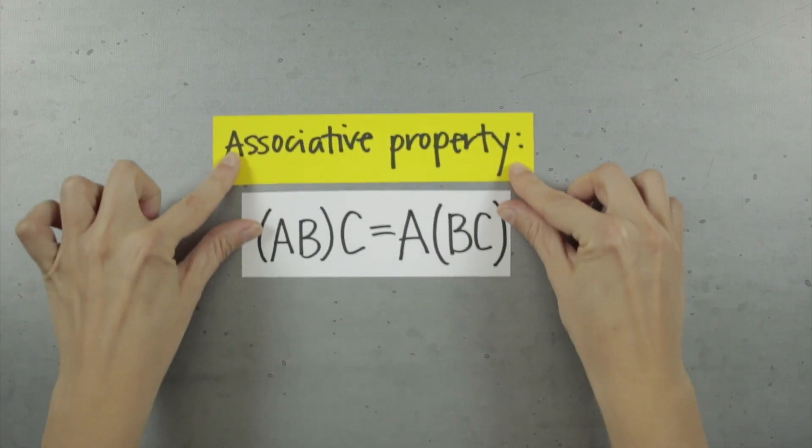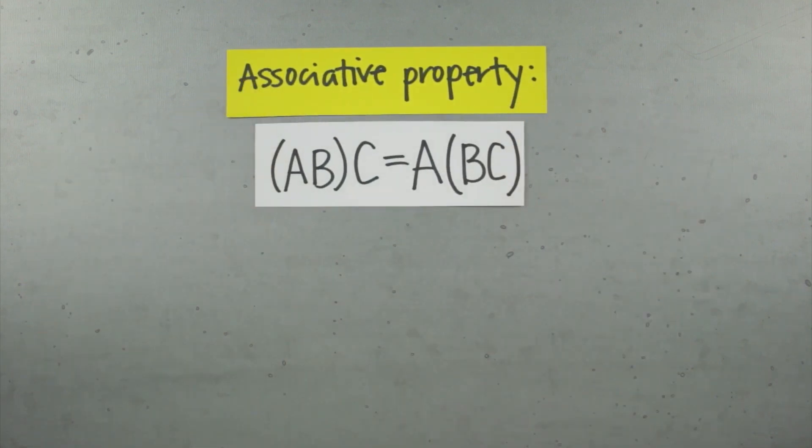So we know that matrix multiplication isn't commutative, but what about the other algebraic properties? With matrices, the associative property does apply, which means that given matrices a, b, and c, this equation holds true. That's because whether we multiply a by b, and then that result by c, or multiply b by c, and then multiply a by that result, the order of the multiplication is still a onto b onto c. So the associative property holds.